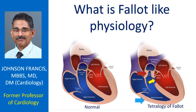Fallot-like physiology is cyanotic congenital heart disease with low pulmonary blood flow. The basic components of this physiology are a large ventricular septal defect (VSD) or single ventricle, and severe pulmonary stenosis, so that there is right-to-left shunt across the VSD and low pulmonary blood flow due to pulmonary stenosis.